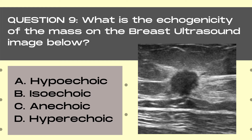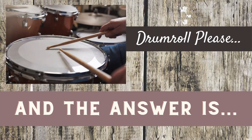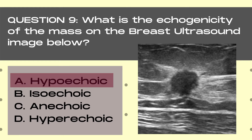Question 9. What is the echogenicity of the mass on the breast ultrasound image below? A. Hypoechoic, B. Isoechoic, C. Anechoic, or D. Hyperechoic. And the answer is A. Hypoechoic. On the ultrasound image, we are looking at the dark gray mass. Areas that are dark gray on ultrasound are known as hypoechoic, and they indicate that the area is a weak reflector, meaning that there are few echoes returning back to the transducer. In breast ultrasound, the more hypoechoic a mass is, as a general rule, the more suspicious it is.